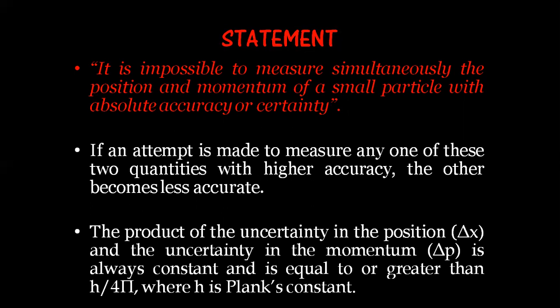That means we will always have some error associated with the system if we try to find out the position and momentum. According to Heisenberg, this product was found to be at least equal to or greater than h by 4π, where h is the Planck constant. The value h by 4π will always come out to be a constant value, meaning the product of the errors can never be zero — so we can never find out the position and momentum of the particle accurately.